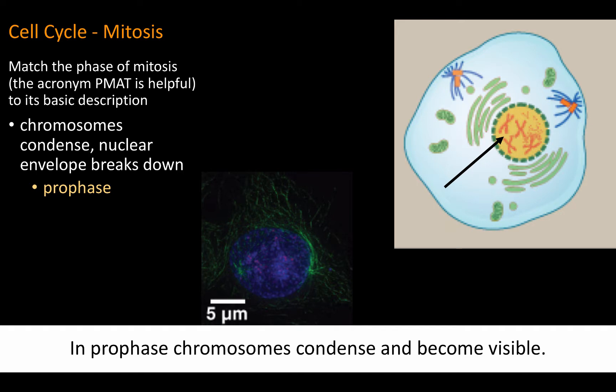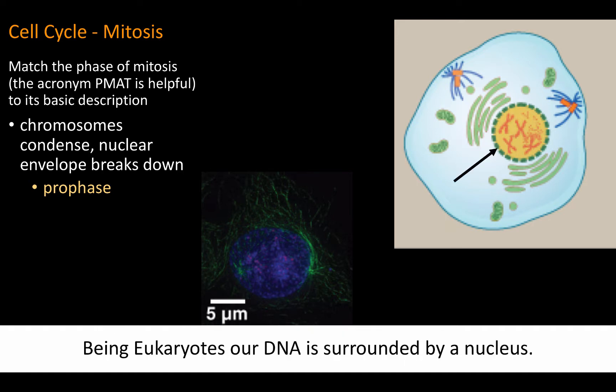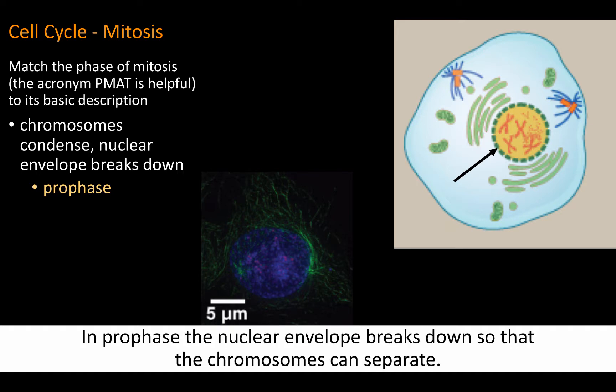In prophase, chromosomes condense and become visible. In interphase, the genetic material existed as more spread out, uncoiled chromatin. Being eukaryotes, our DNA is surrounded by a nucleus. In prophase, the nuclear envelope breaks down so that the chromosomes can separate.